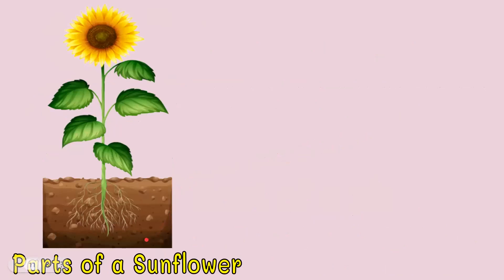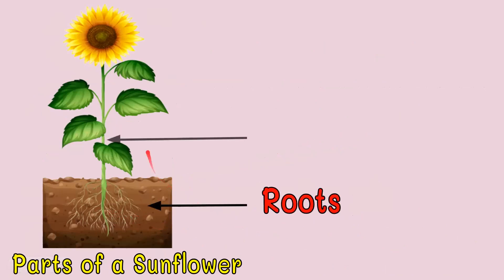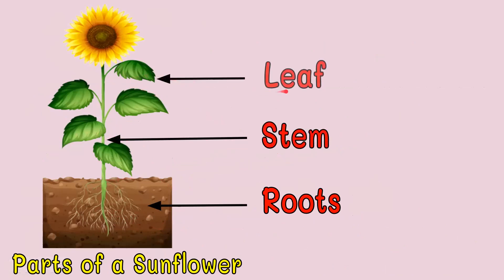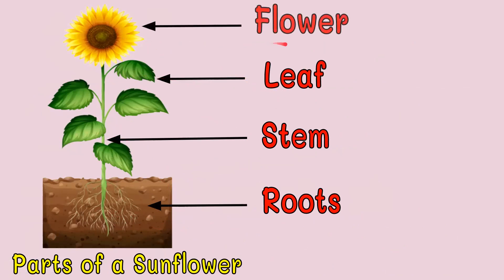For the parts of a sunflower, this is the roots. This one at the center here — stem. Very good. This one? Leaf. Right. How about this? Flower. Correct. These are the different parts of the sunflower: roots, stem, leaf, and flower.